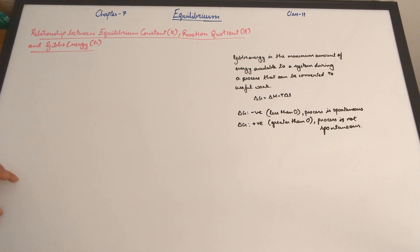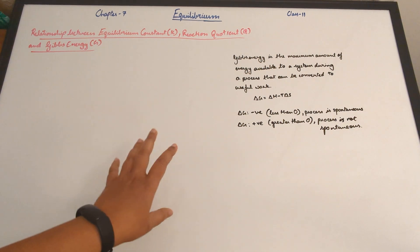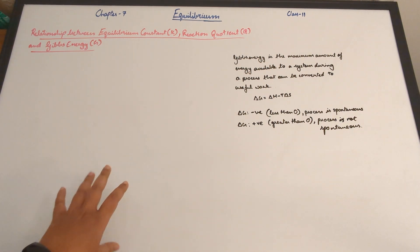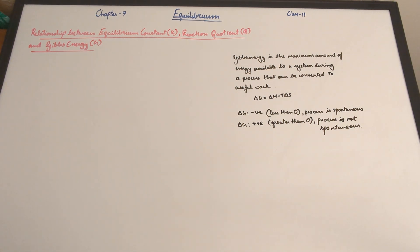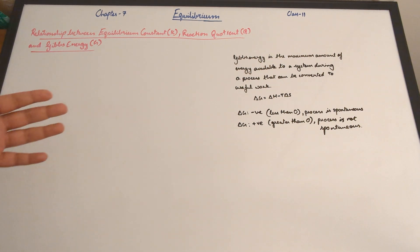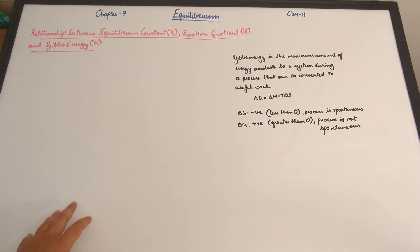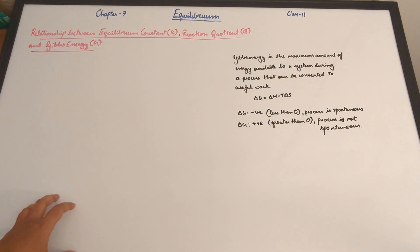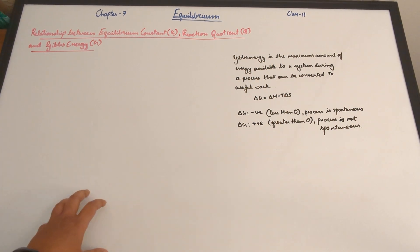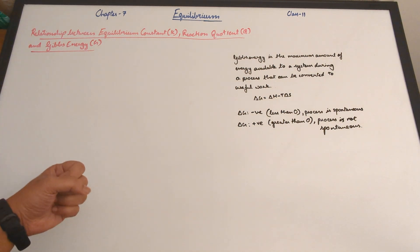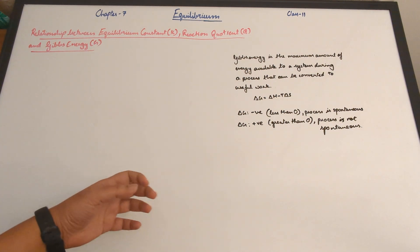So, what is Gibbs energy? This is the definition from Modern ABC's Chemistry — it's really good. Gibbs energy is the maximum amount of energy available to a system during a process that can be converted to useful work. Basically, it's the amount of energy that is available to do work.